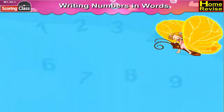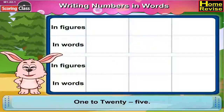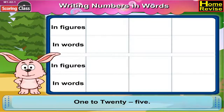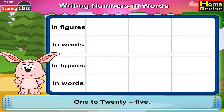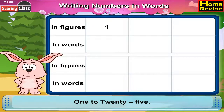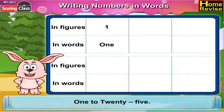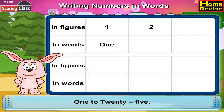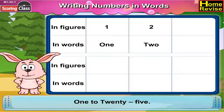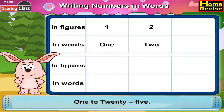Writing Numbers in Words, 1 to 25. In figures and in words. In figures you write like this: 1. In words it is O, N, E. In figures it is like this: 2. In words it is T, W, O.